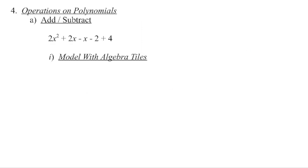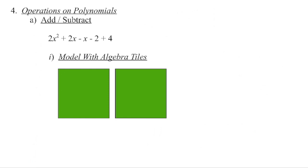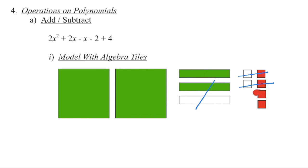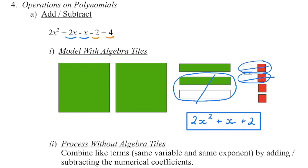We can use those algebra tiles to model algebraic expressions. For 2x squared, we need two colored x squared tiles. We then have two x's, so two green rectangles. We have a negative x, so one unshaded x piece, and negative 2, so two unshaded 1 squares, and positive 4, which is four colored squares. We can clean this up: one positive and one negative zero out. We're left with two x squareds, one x, and two positive ones — our simplified expression. If algebra tiles have the same size and shape, they are like terms: x's are like terms, ones are like terms, x squareds are like terms.